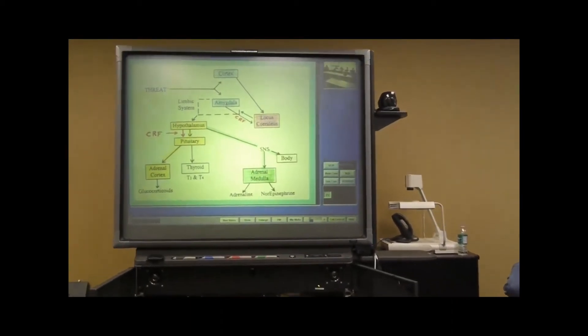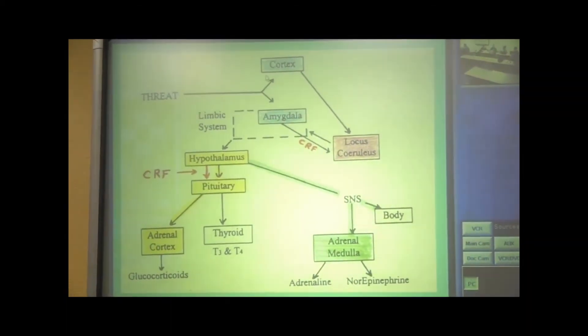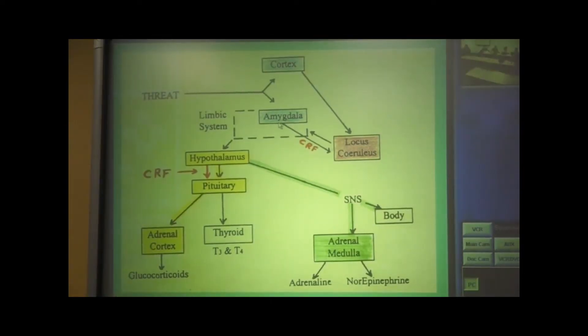In normal fight or flight responses, let's say there's a real threat in the environment. And remember, that is processed. You have parallel processing. It occurs at the level of cortex and the level of the amygdala. All right? Then, what's going to happen is if there's danger, then each one of these brain structures will use their own nerve cells, their own neurotransmitter to activate the locus coeruleus. We're going to look at that in detail in just a minute.